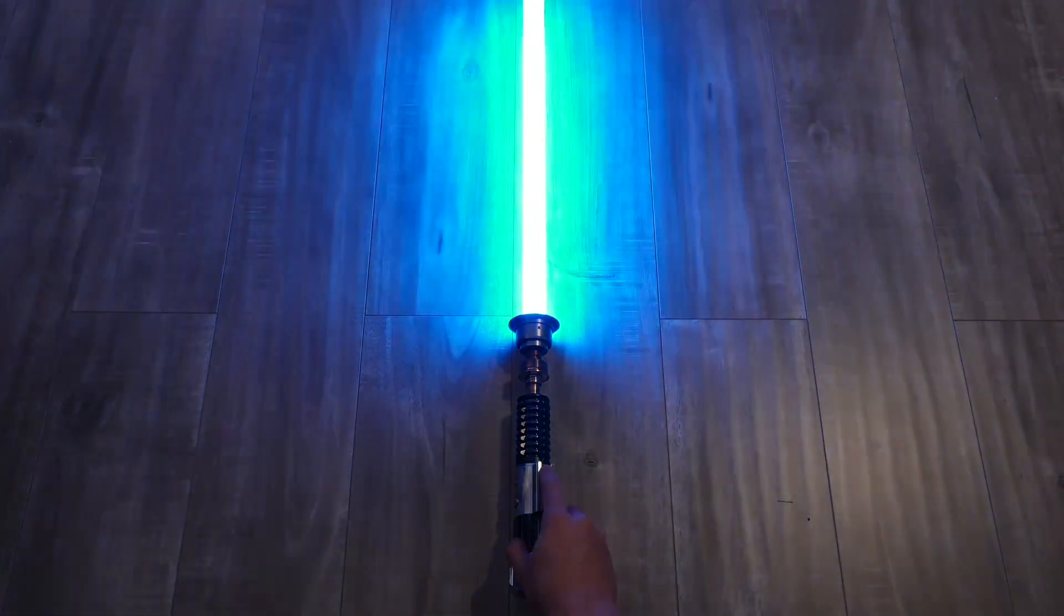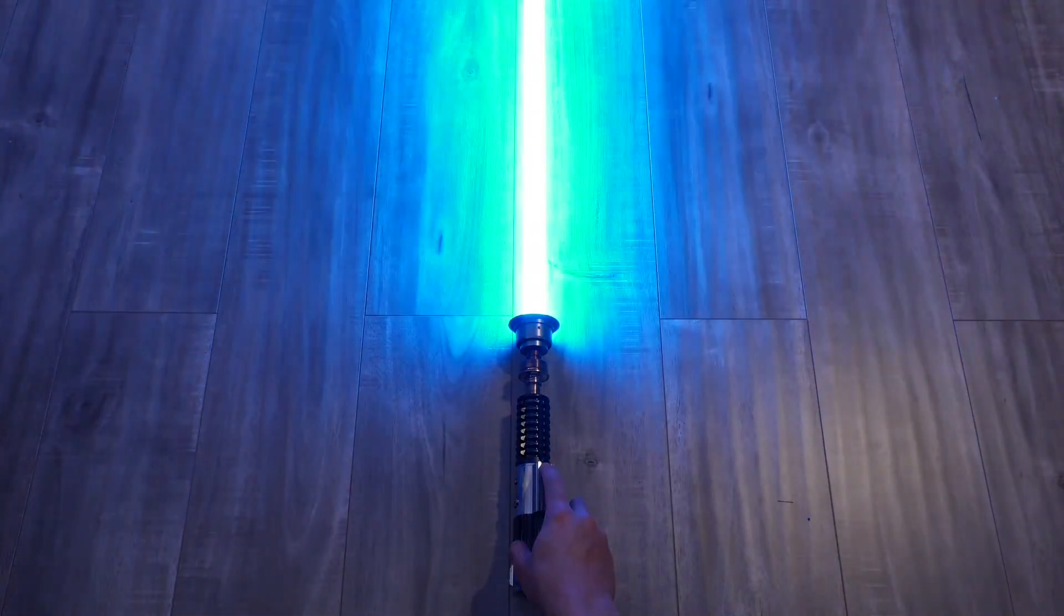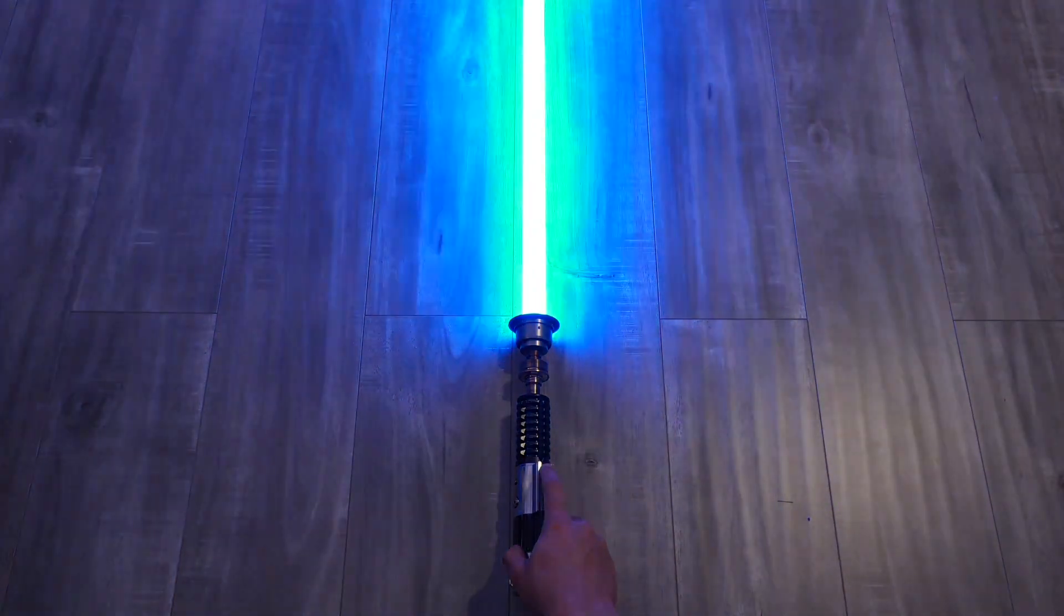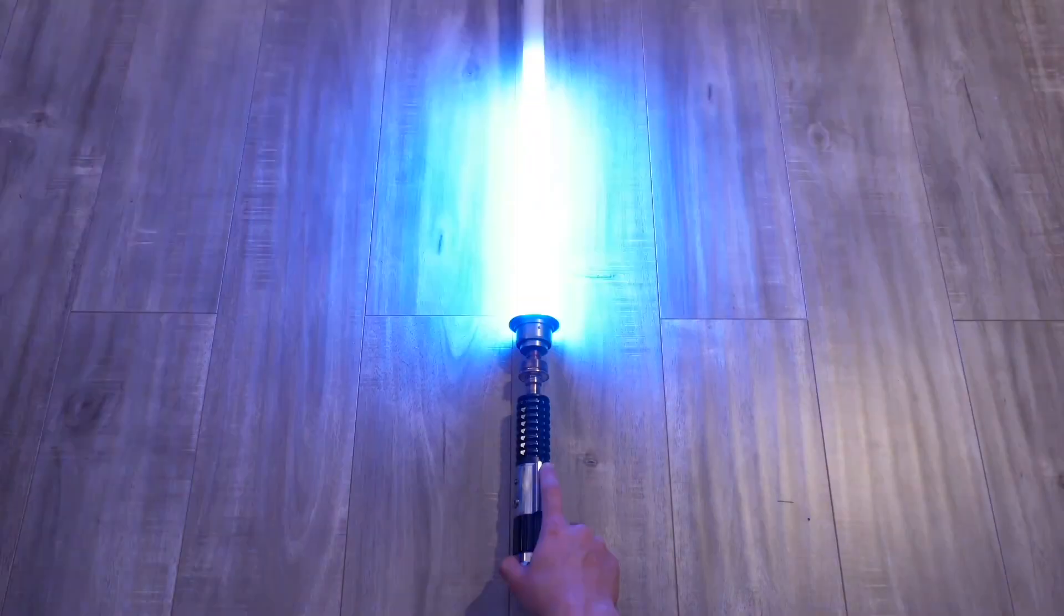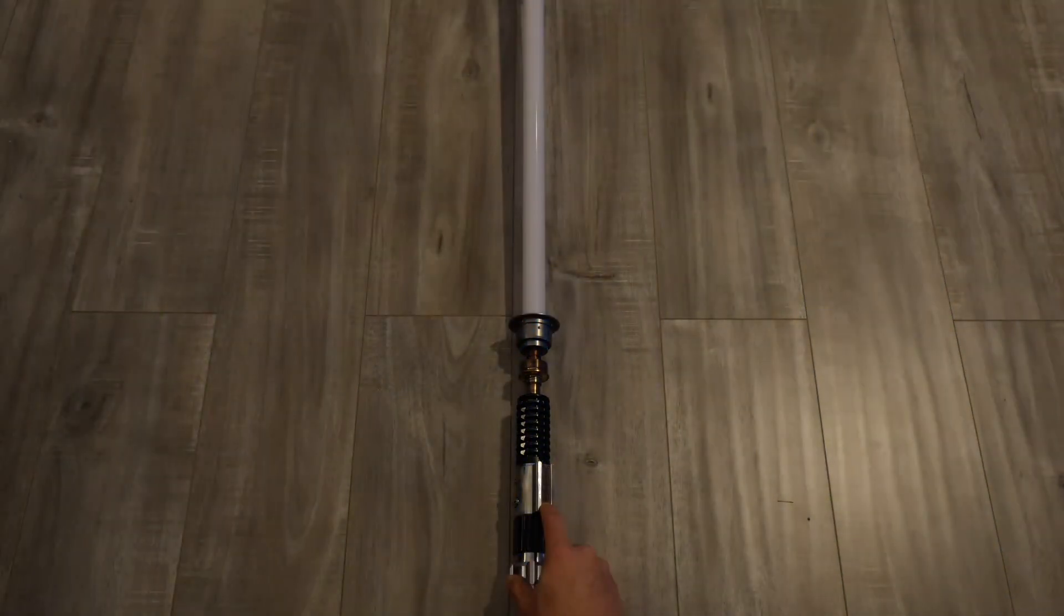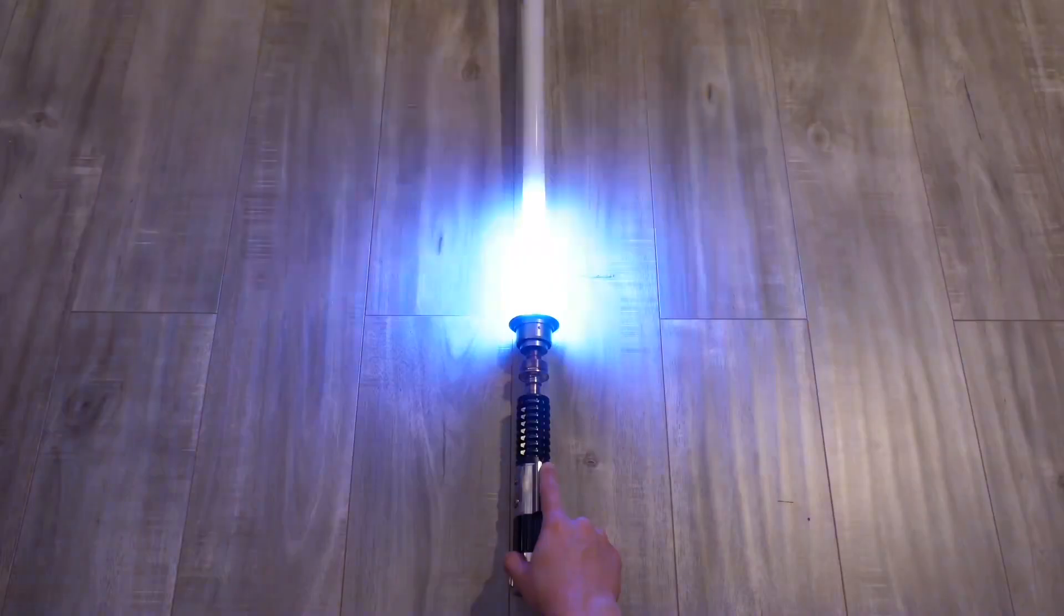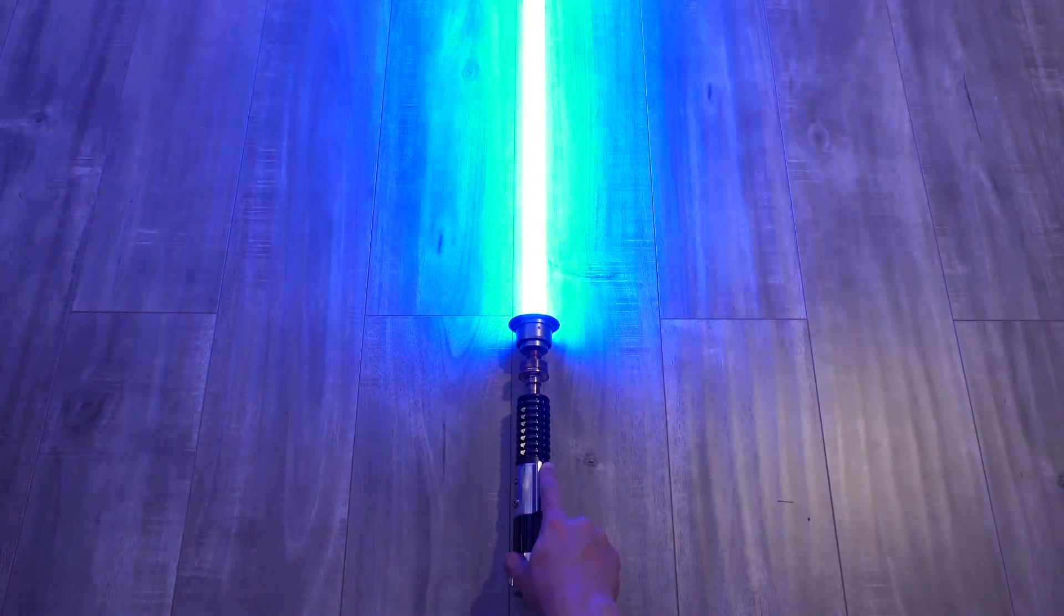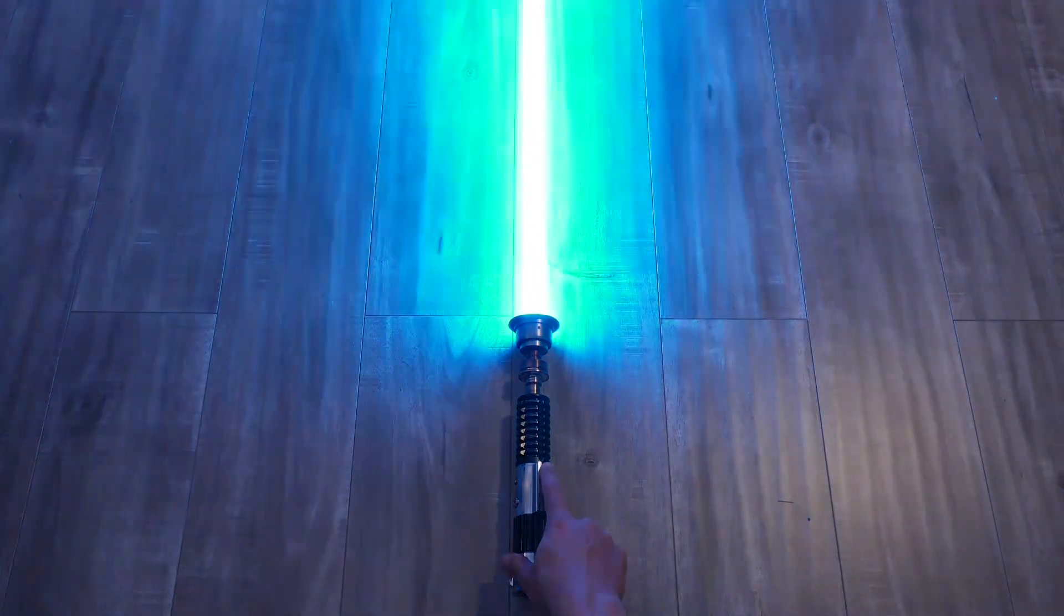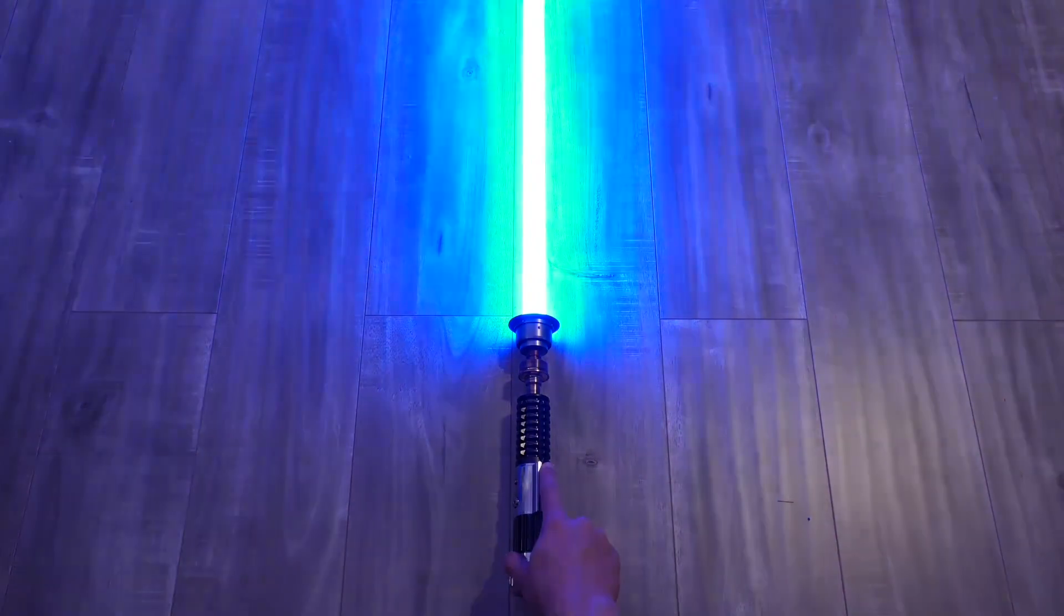And now for the fonts. This is from Episode 1. Episode 2. This is from Clone Wars. Episode 3. The Kenobi TV show. Another version of the TV show font. And finally, Episode 4. Thank you all for watching this build, and be sure to tune in for the next project.